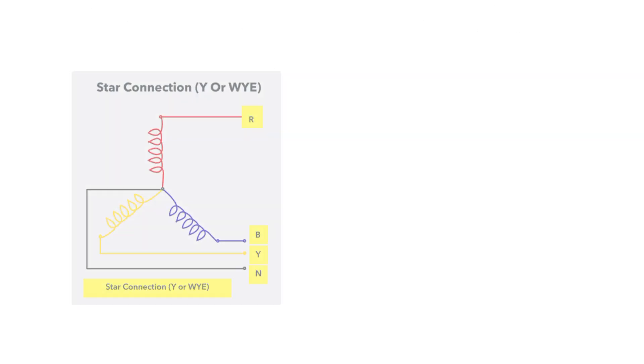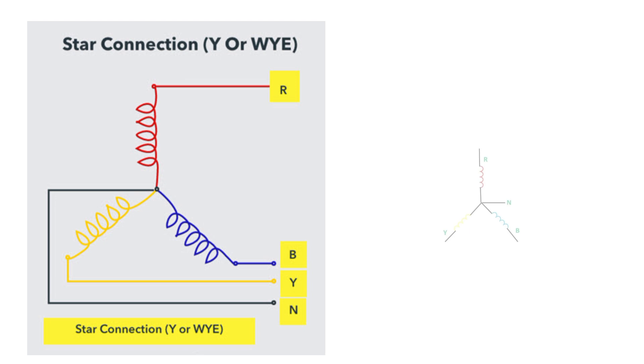In star connection, three phases are meeting at one junction. That junction is known as the neutral point. Here you can see in the image also.